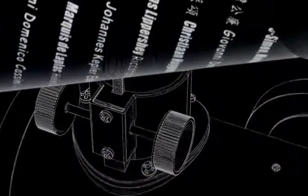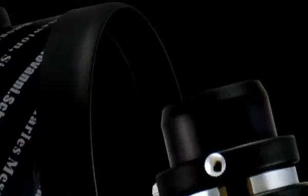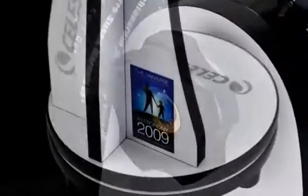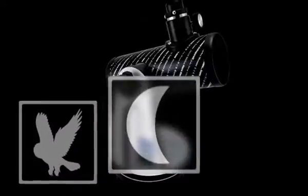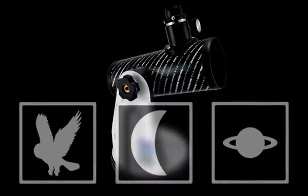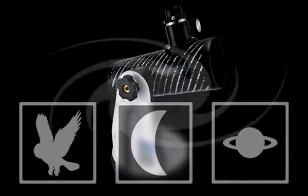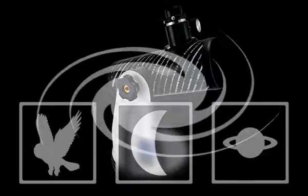Don't let the simplicity of the design deceive you. The First Scope is a powerful optical instrument. High-quality optics, combined with a sturdy tabletop stand, make this telescope excellent for terrestrial, lunar and planetary observation. First Scope is even capable of showing some of the brighter galaxies and nebulae.